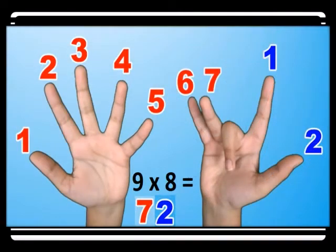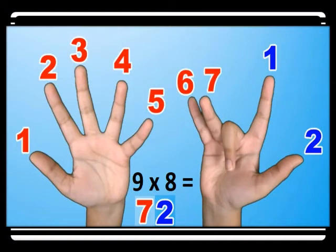For nine times eight, you bend the eighth finger. You have seven before the bent finger and two after, so we have seventy-two. Nine times eight equals seventy-two.